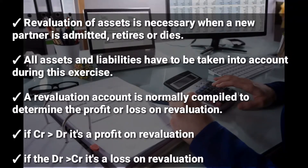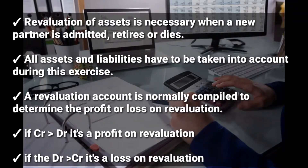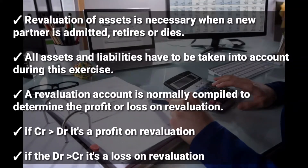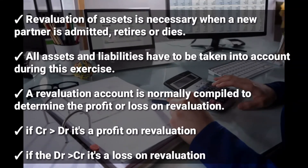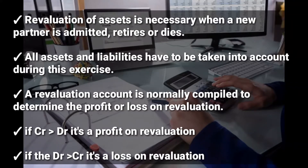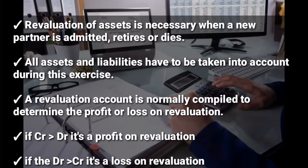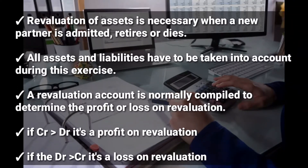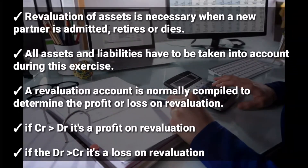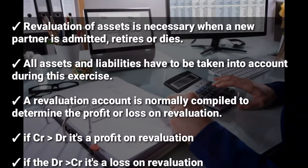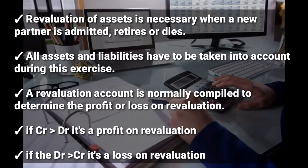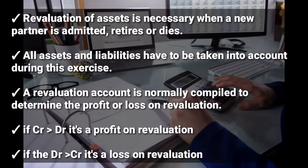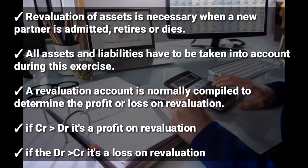When we prepare a revaluation account and the credit side is greater than the debit side, it's called a profit on revaluation. When the debit side is greater than the credit side, it's called a loss on revaluation. In accounting, when the credit side is greater than the debit side, it's a profit, and when the debit side is greater than the credit side, it's a loss.